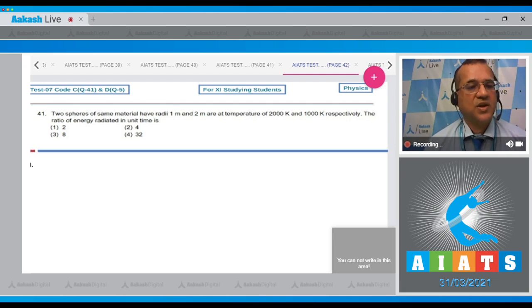Question number 41: Two spheres of the same material have radii 1 meter and 2 meters at temperatures of 2000 Kelvin and 1000 Kelvin respectively. The ratio of the energy radiated per unit time—you know Stefan's law.